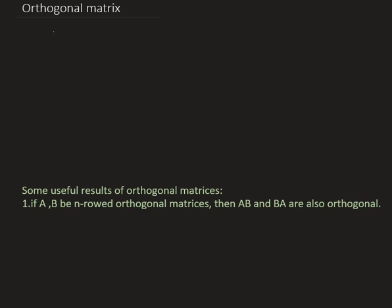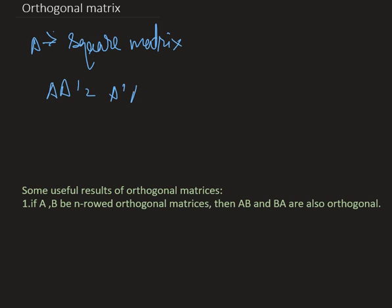Today we are going to discuss orthogonal matrices. A square matrix A is called an orthogonal matrix if A times A-transpose equals A-transpose times A equals the identity matrix I.